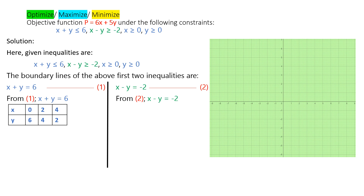So when the x-value is 0, y is 6. Graphically, we place the point (0, 6): x value is 0 and y value is 6. Similarly, x value is 4 and y value is 2.